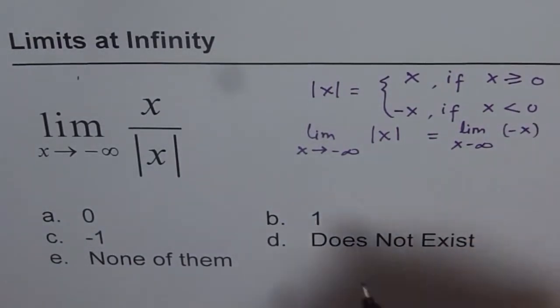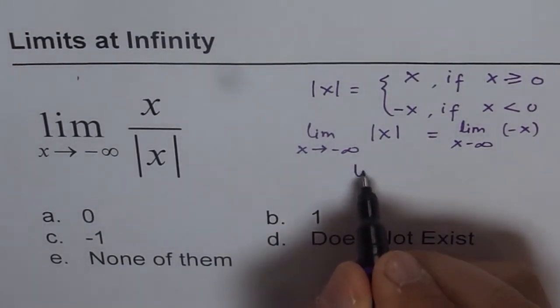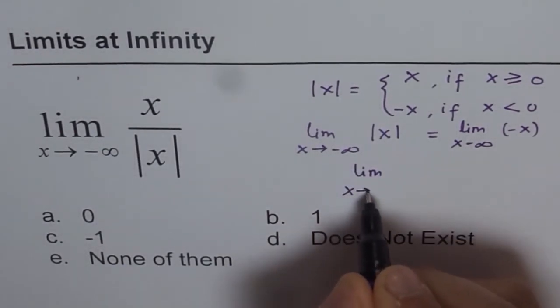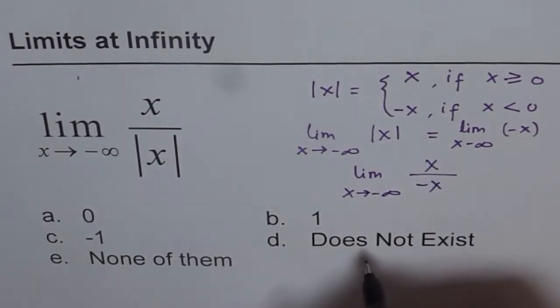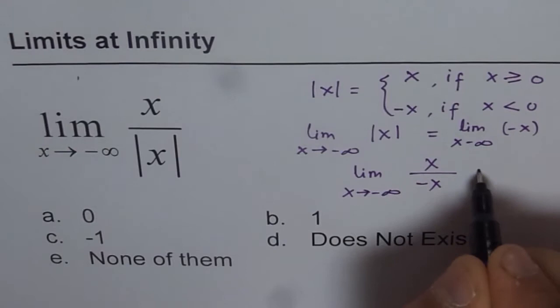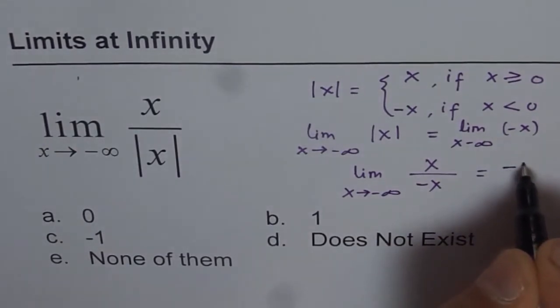Therefore, we can write this function as limit x approaches minus infinity of x over minus x, and that gives us a value of minus 1.